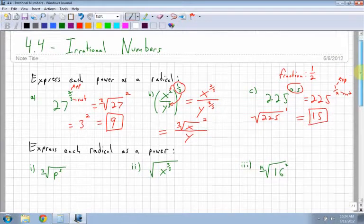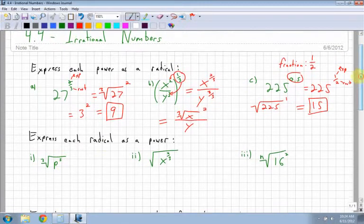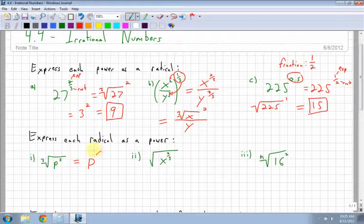Now let's work backwards. Express each radical as a power. So this time I'm going to work backwards. I'm going to look to see, what's my power? It's a 5. What's my root? And this one is a 3. So I'm going to have p, and I know that my exponent is going to be a fraction. The number on top of my exponent for the fraction is going to be the exponent, which is 5. And the number on bottom is 3.